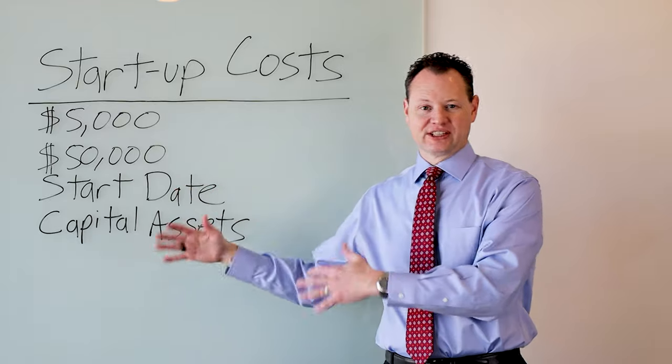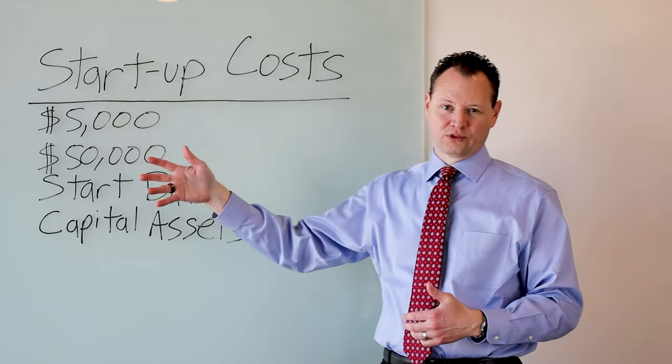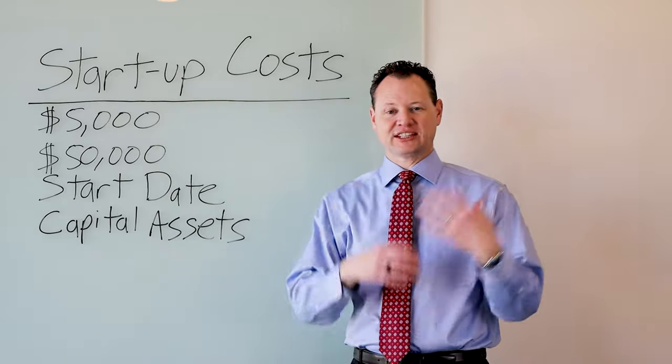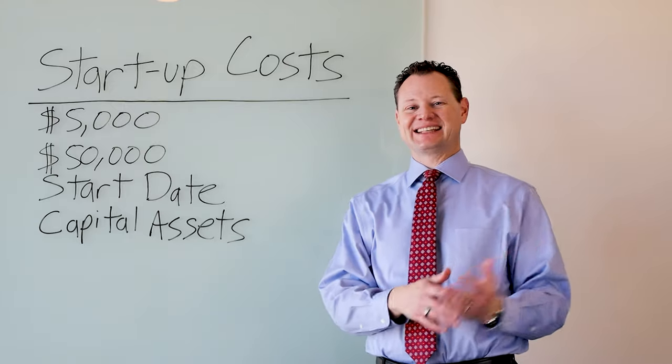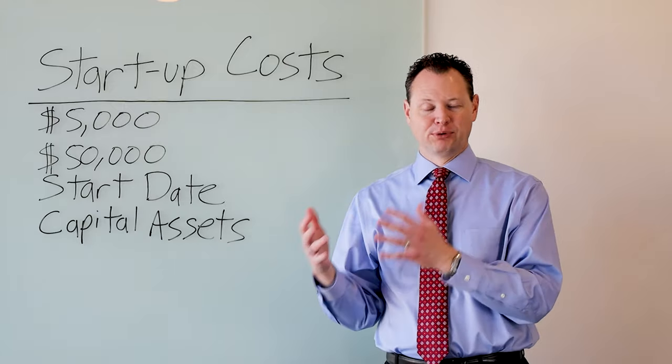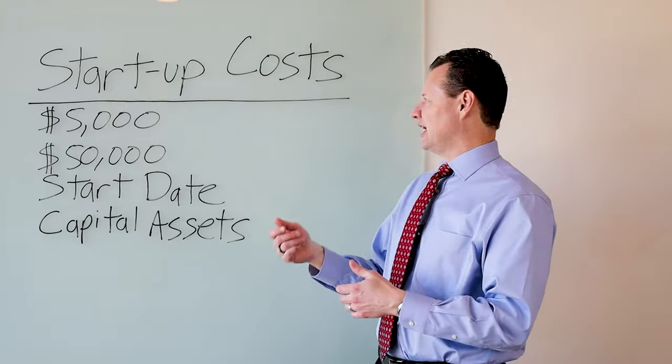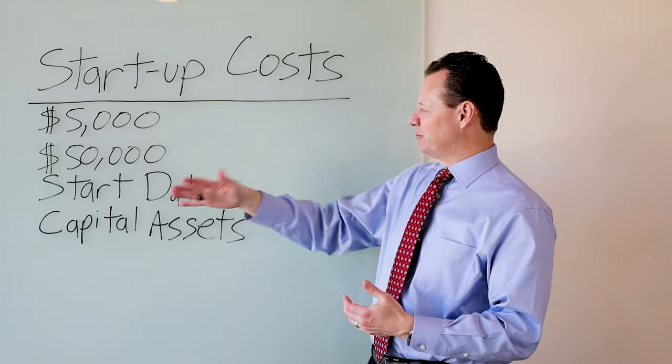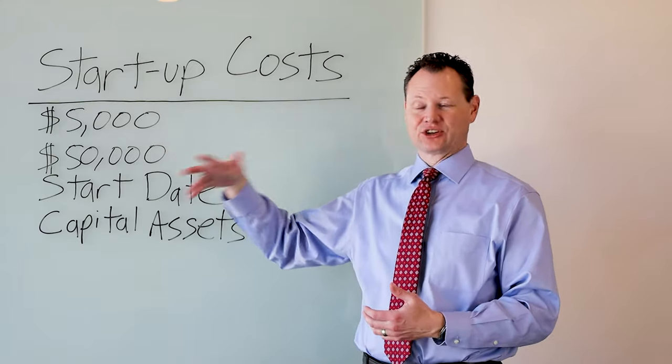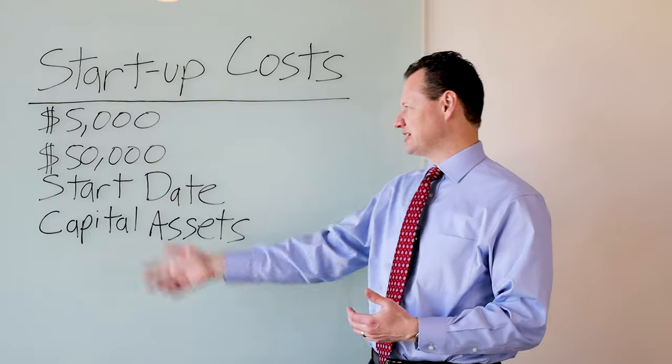And so up until that start date, these costs are what is called capitalized. They're not expensed. Instead, they're held as an asset on the books of the business. And then when the business starts, that is when you can actually start either deducting them or you have to amortize them.